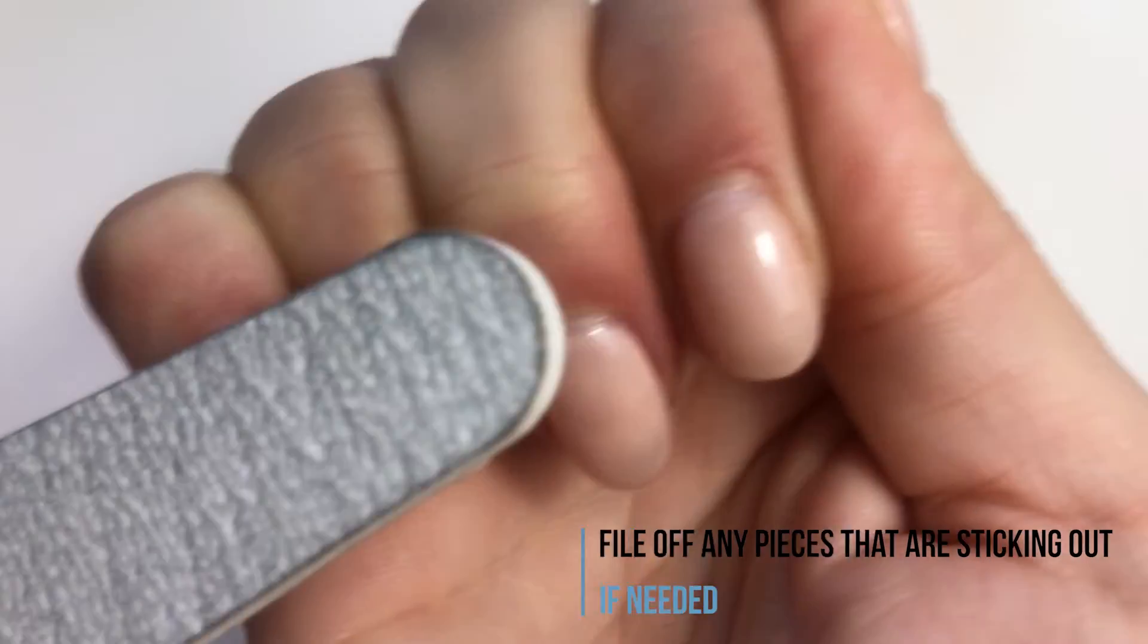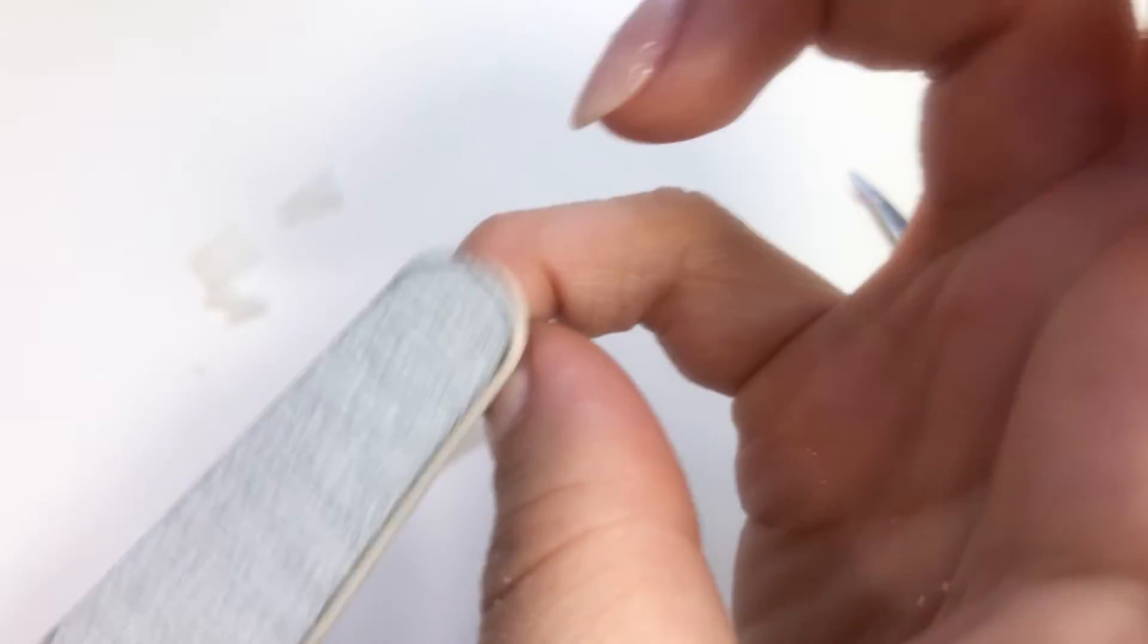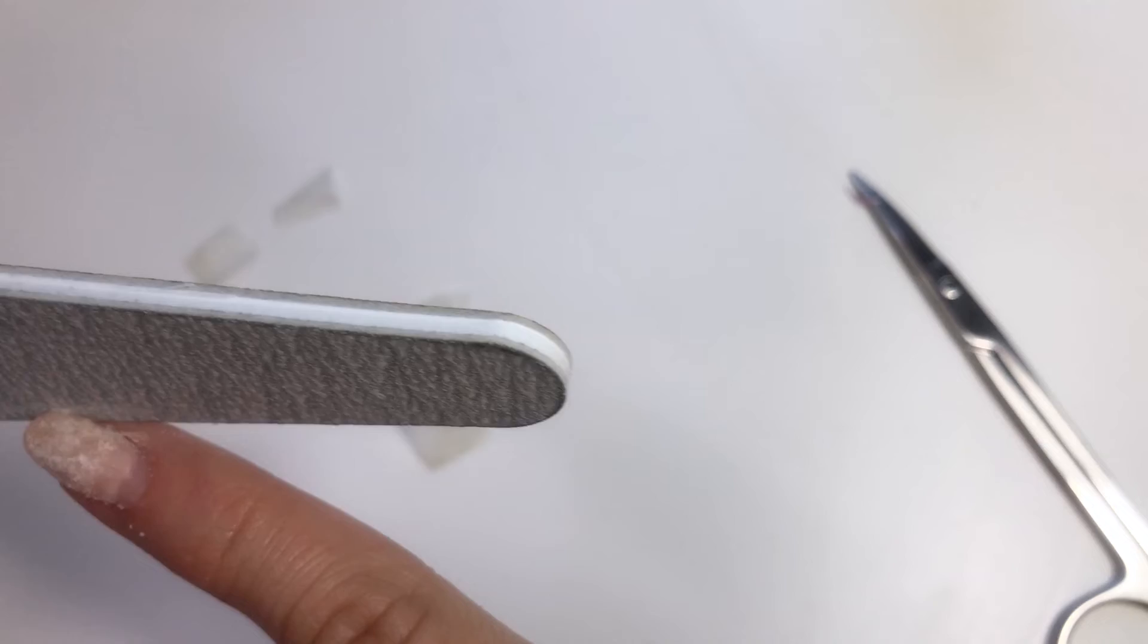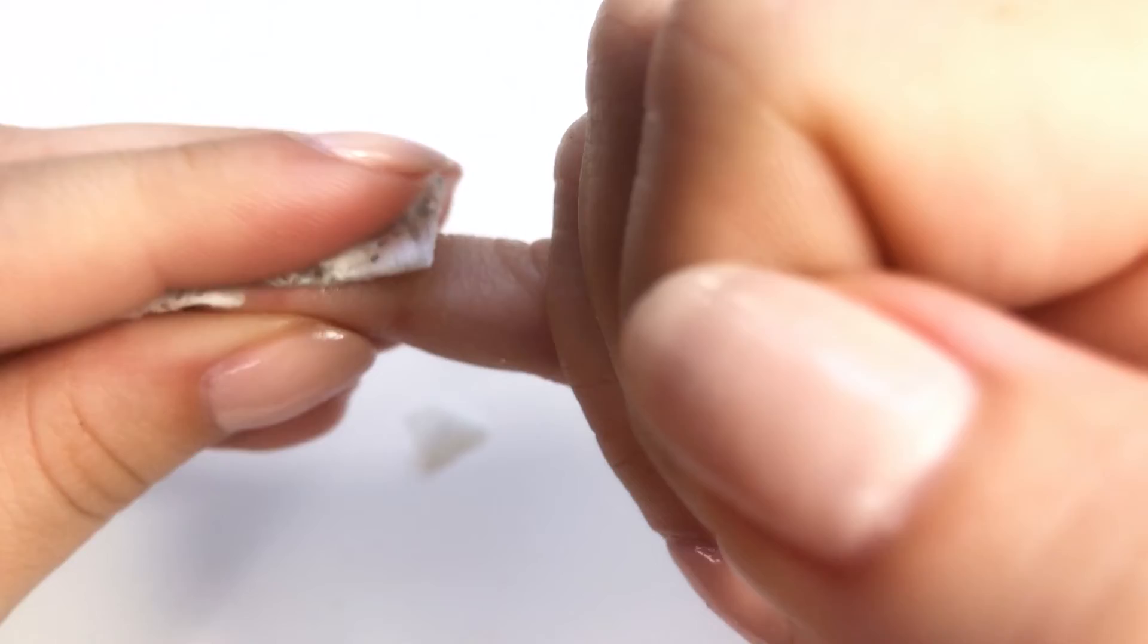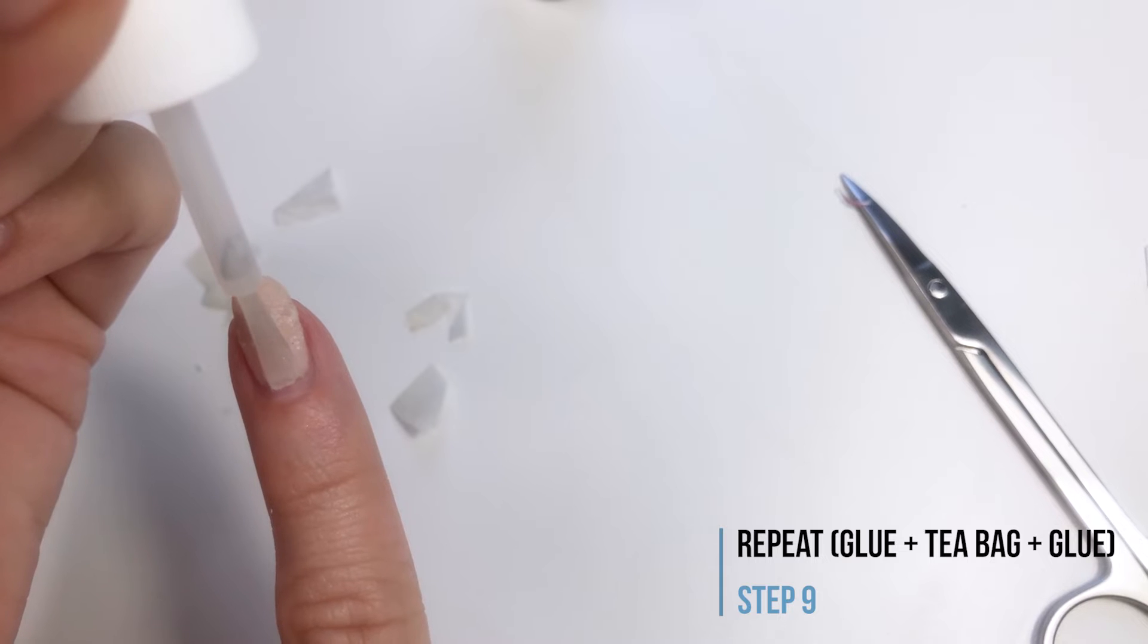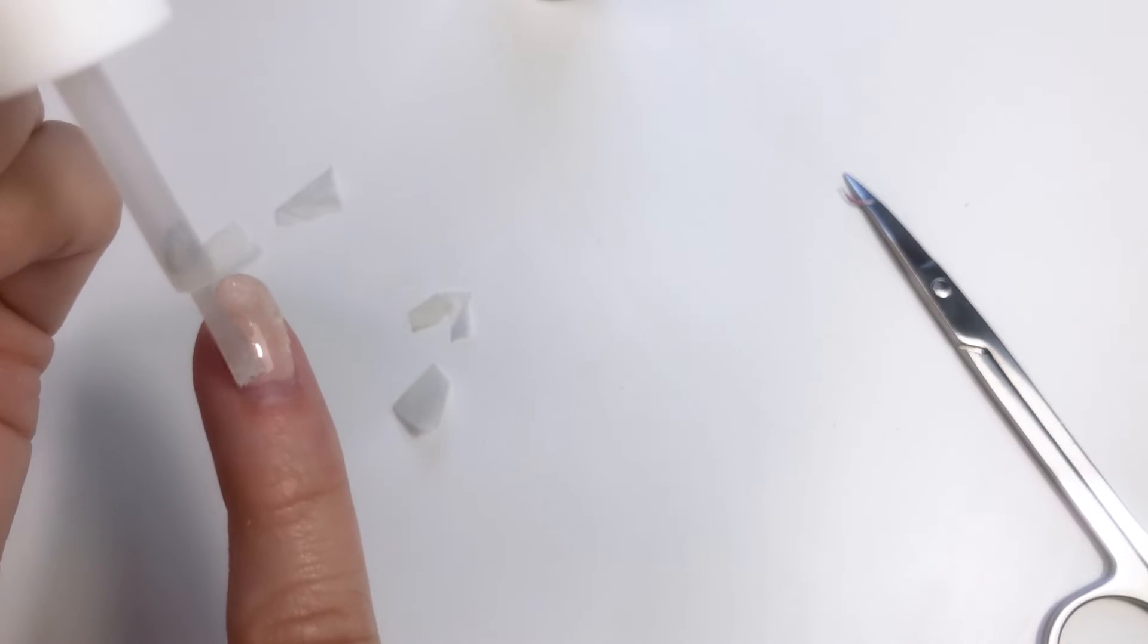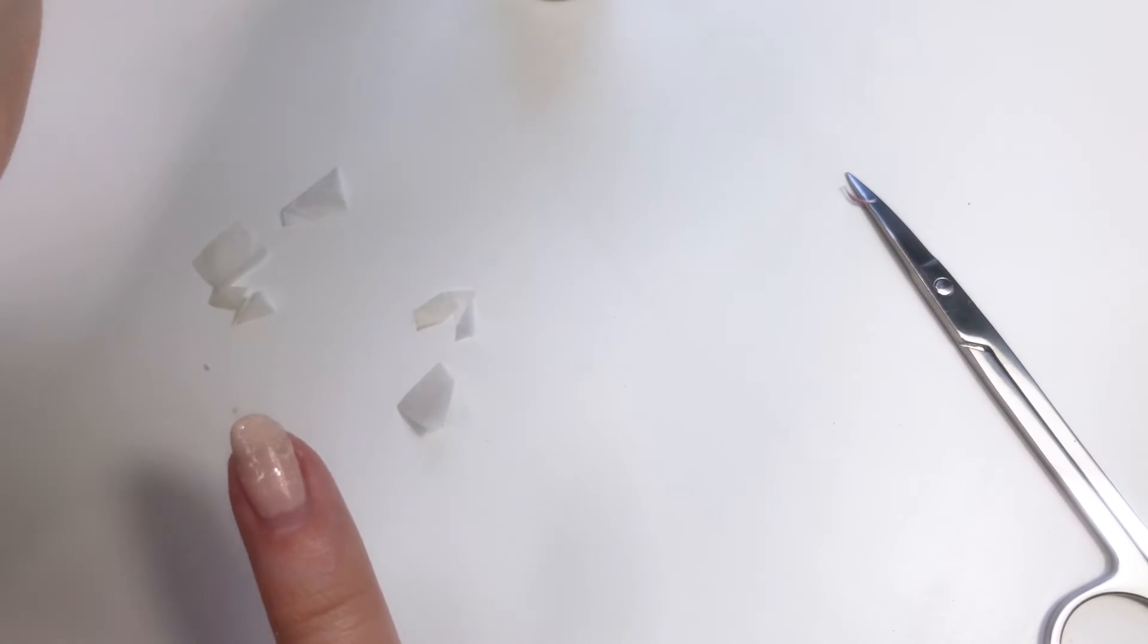Now because this piece didn't glue correctly and it's sticking out I'm just gonna use my file to smooth it down. I'm also filing the edges to make sure that they're smooth and the teabag doesn't go beyond them. I'm just wiping off the dust using acetone. Now I'm applying another layer of glue on top of the whole nail. I'm taking another piece and gluing it on the other side of the nail.